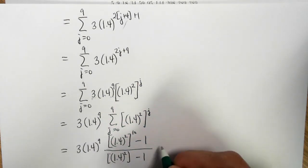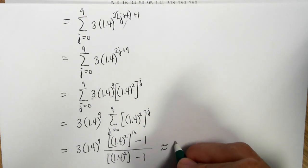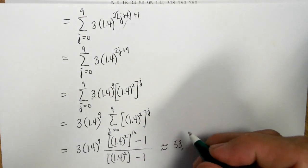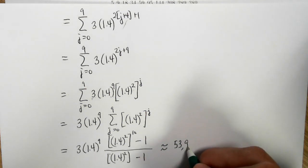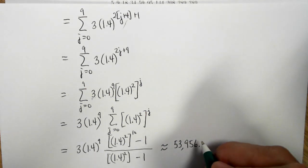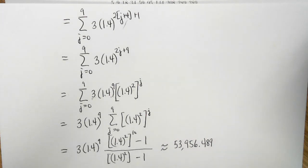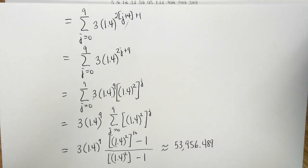And then it's just a matter of plugging into a calculator to see what we get. And assuming I did the arithmetic correctly, I get 53,956.489. And that would be the answer accurate to three decimal places.